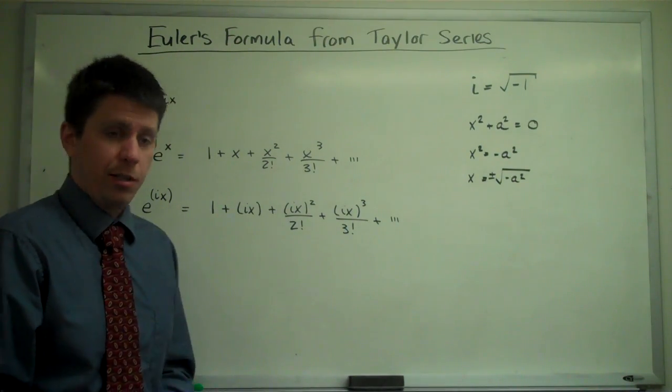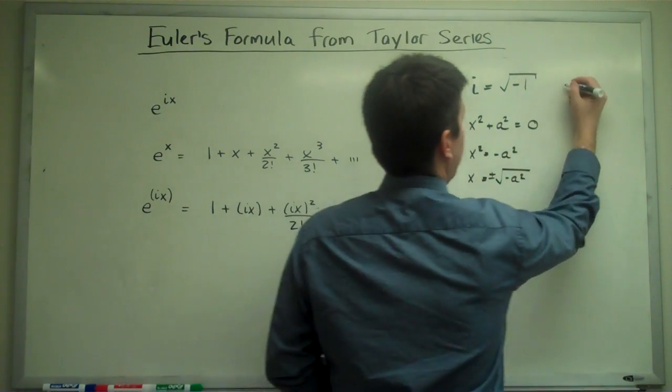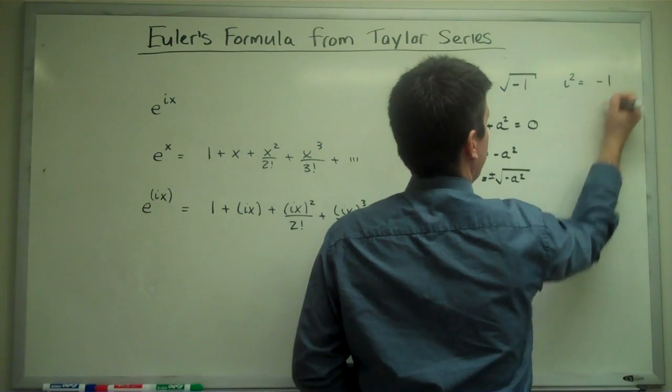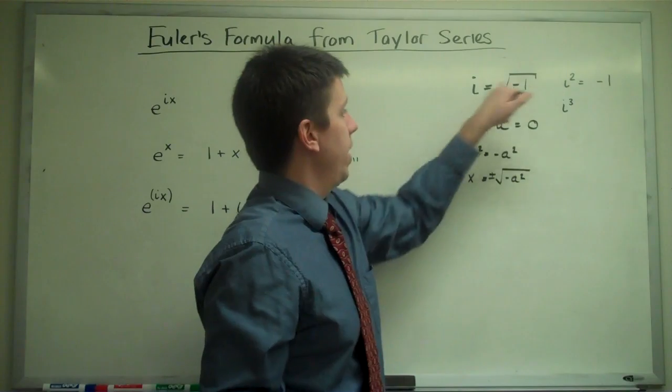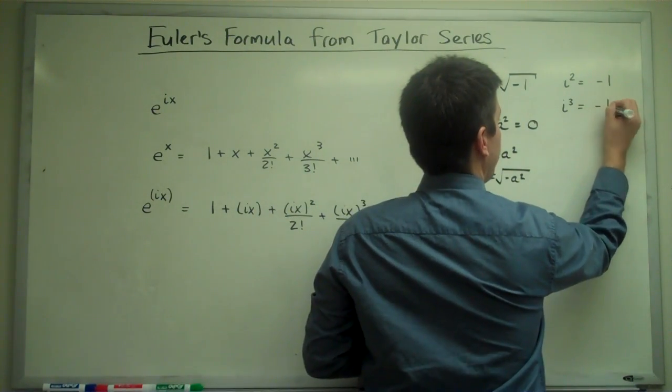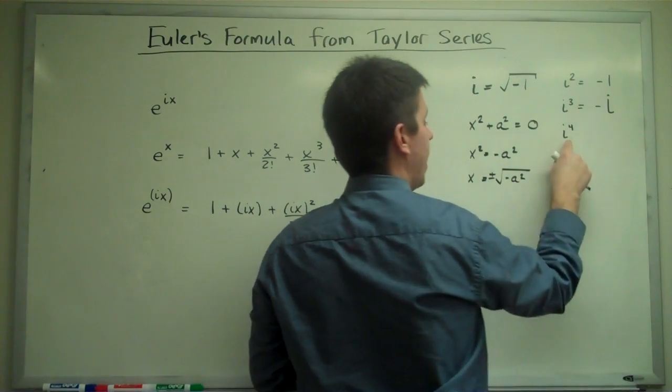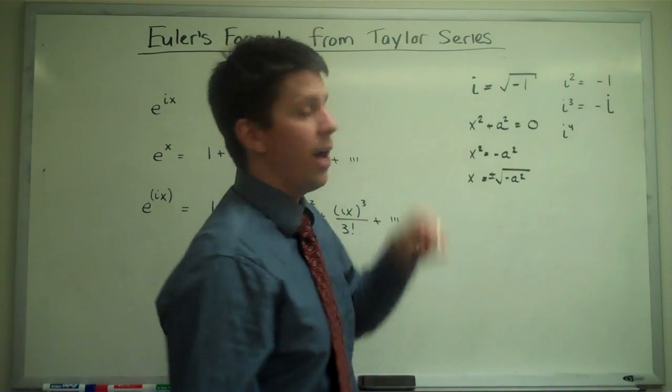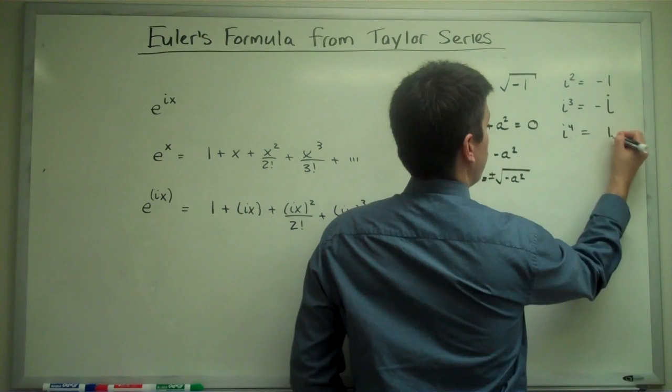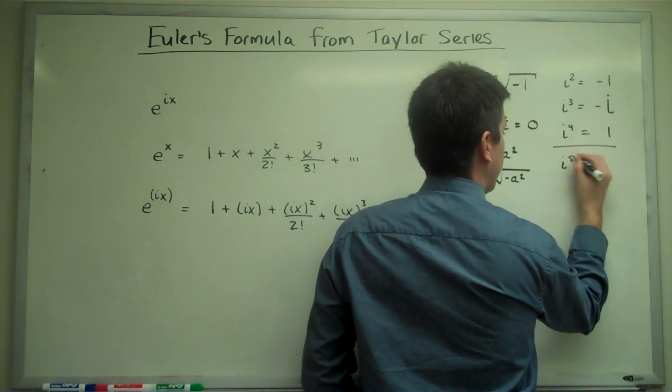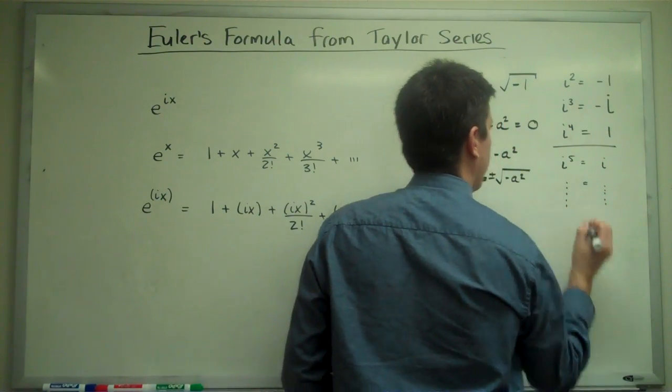But this can be simplified a little bit, because if i equals the square root of minus 1, then i squared is minus 1. i cubed is i squared times i, which is negative i. i to the fourth equals i cubed times i, which is negative i squared, which is negative negative 1, which is 1. And they then repeat. i to the fifth is i, and so on.